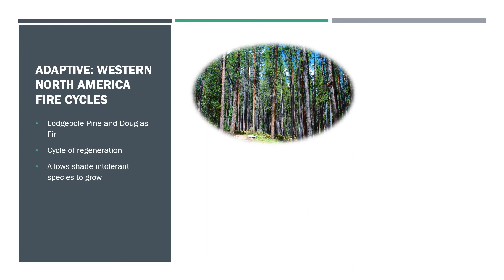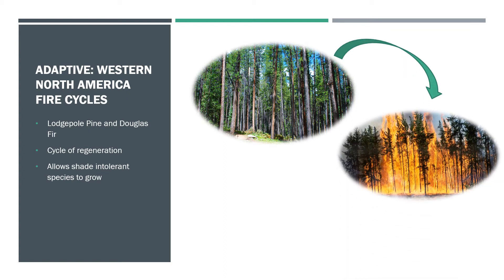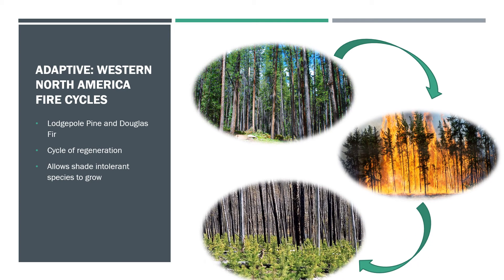Below, you can see a cycle depicting the way fire affects lodgepole pines. It starts with mature trees being burned in a fire, which causes their crowns to be destroyed. This opens up the canopy for sun to filter through, allowing seed saplings and seedlings to regenerate and eventually become the mature forest again.